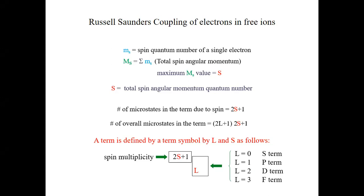Let us move on with the electronic spectra. In the last class we arrived at the result that in order to accurately predict the electronic spectra of complexes, we need terms. Terms are necessary in order to account for the interactions between the electrons, which is not accounted for in ligand field theory. In ligand field theory we have orbitals, and these are one-electron functions.